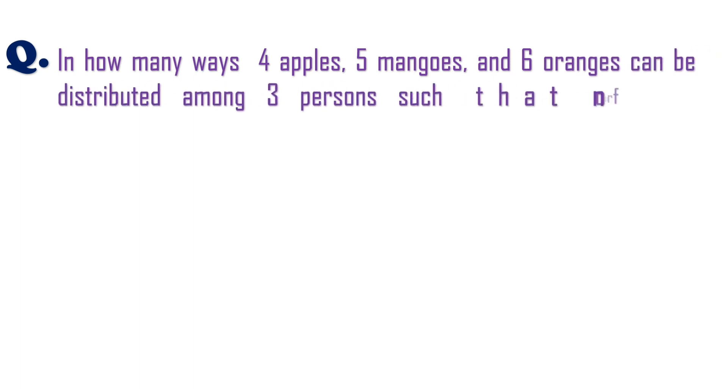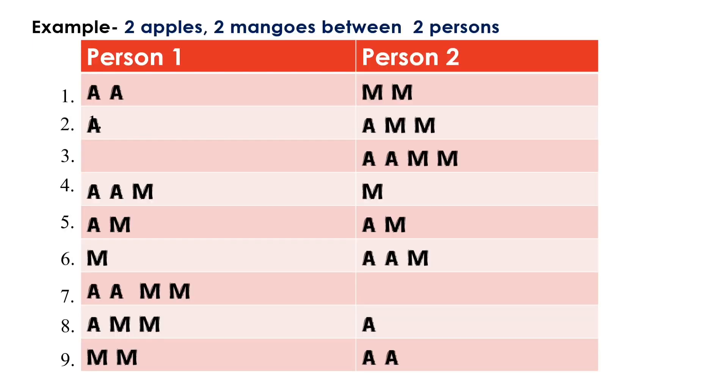Here is our previous question. In how many ways 4 apples, 5 mangoes and 6 oranges can be distributed among 3 persons such that no fruit remain undistributed. For example, if we distribute 2 apples and 2 mangoes between 2 persons then here are the total number of ways. In the similar way we have to solve the question.